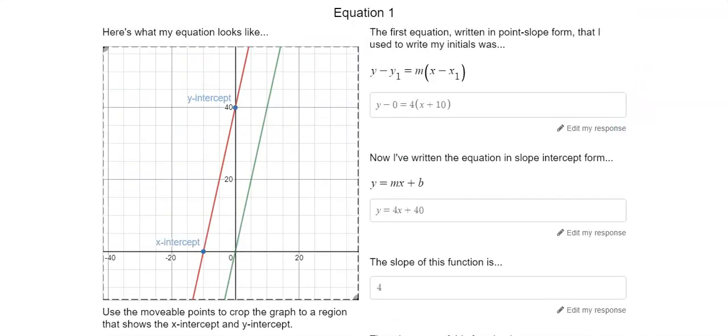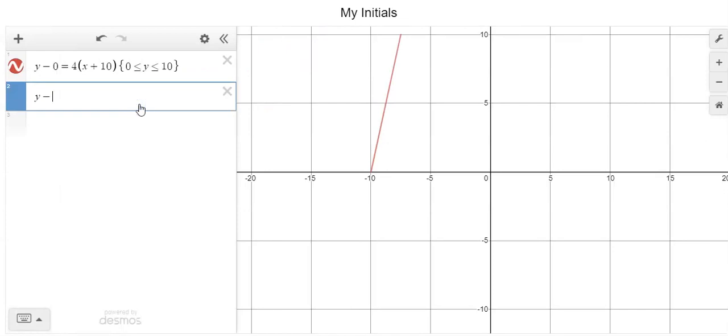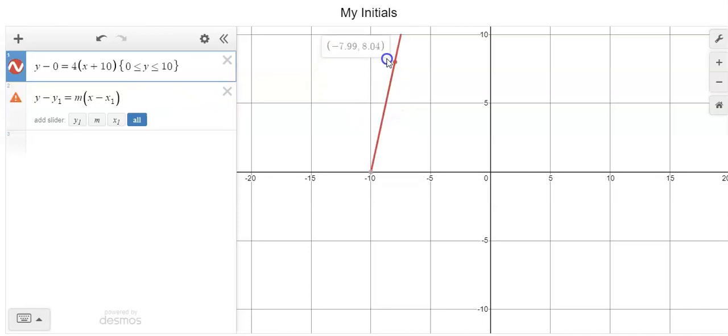I would go back to my initials graph. And I would start again, Y minus Y1 equal to M times X minus X1. And now you have to find another coordinate that you want to start with to create whatever letter you're doing. Follow the same process and fill out all the attributes. When you continually do this over and over again, eventually you will have your entire initials graphed on the screen. See y'all in class.